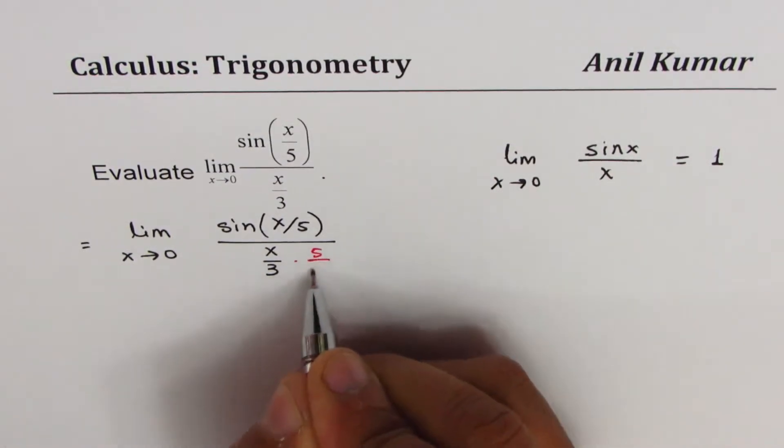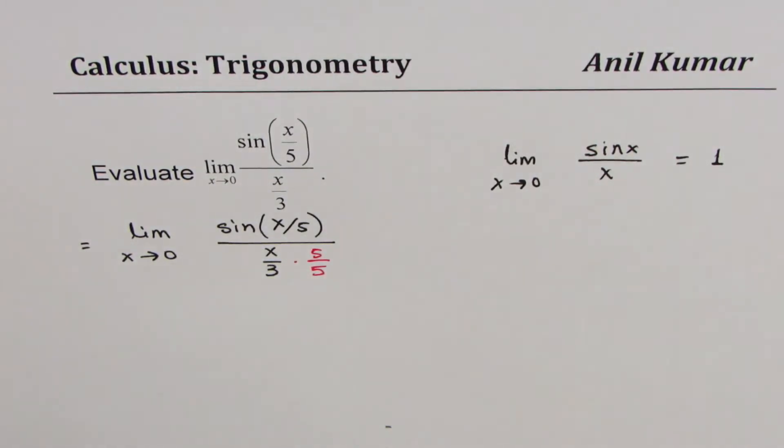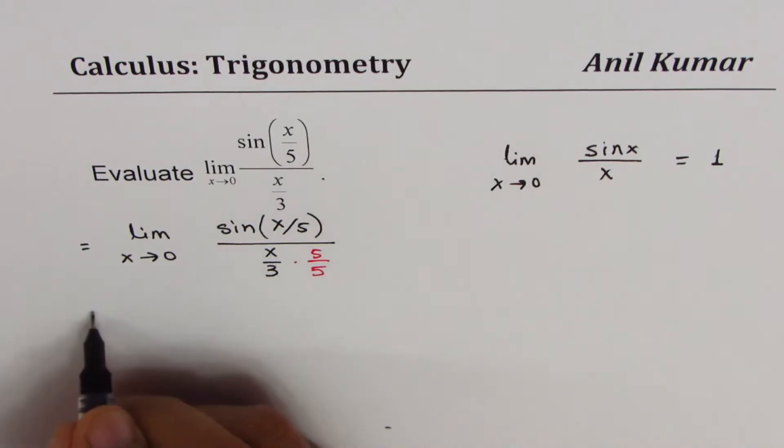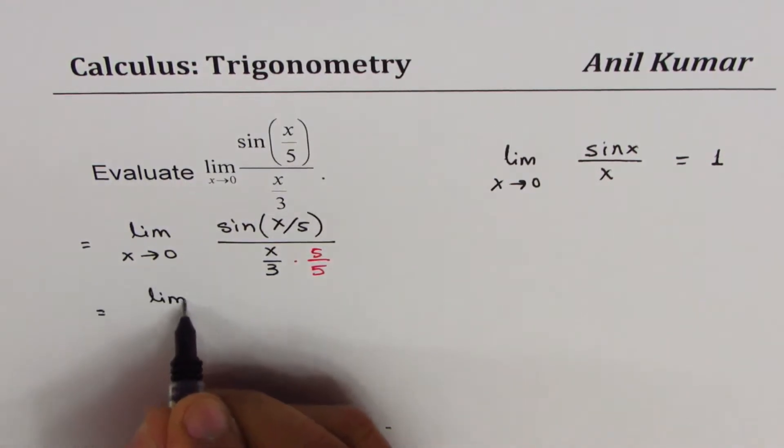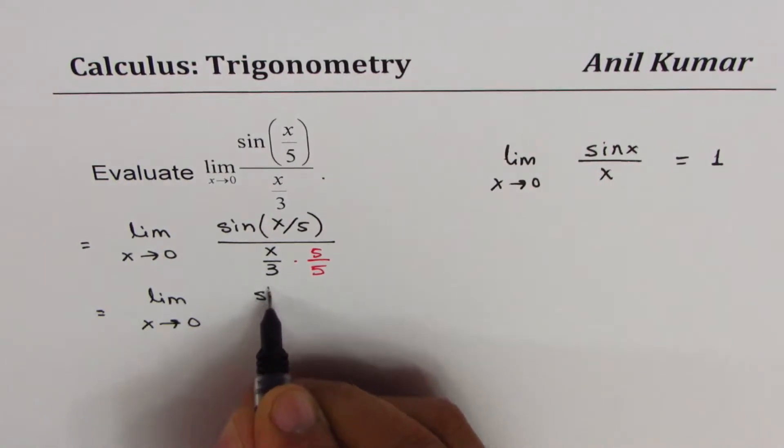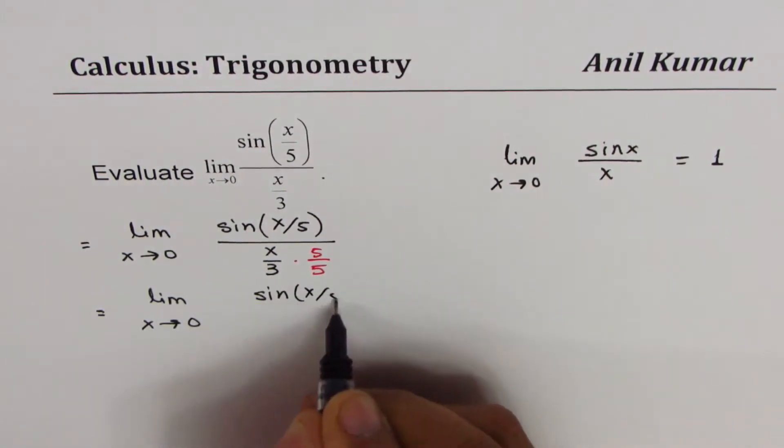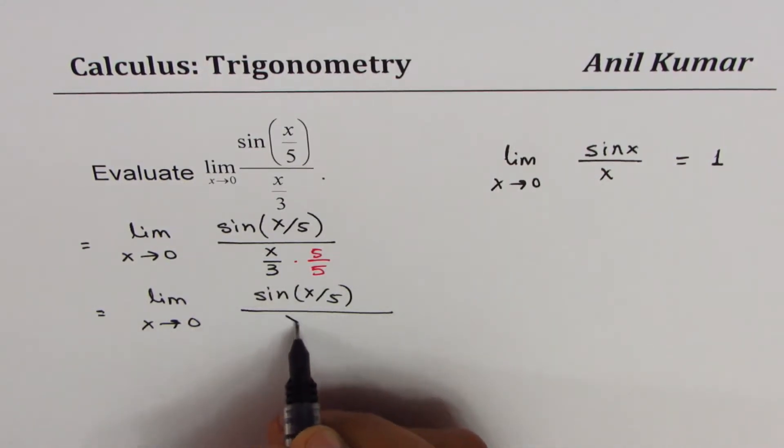Do you see that I can multiply and divide this by 5? Then we could write this as: limit as x approaches 0, we have sin(x/5) divided by—now shifting—we get x/5 times 5/3. Does it make sense to you?